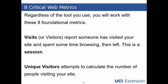Let's move on to the discussion of eight critical web metrics that you'll be dealing with on a regular basis. Visits or visitors — visits are a measure of user sessions. Unique visitors is a bit different to calculate: it's the actual number of people who came to the site.